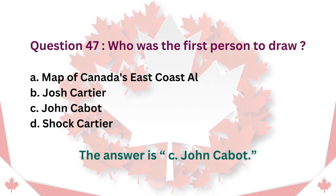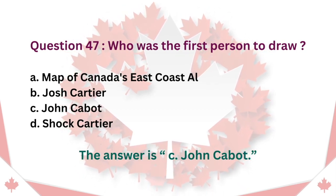Question 47: Who was the first person to draw a map of Canada's east coast? A. Owl. B. Josh Cartier. C. John Cabot. D. Shock Cartier. The answer is C. John Cabot.